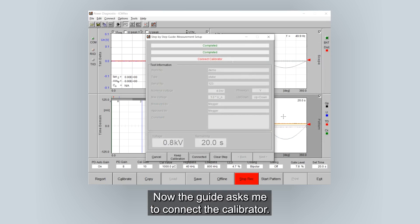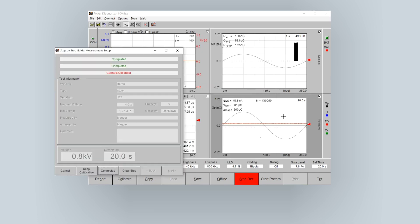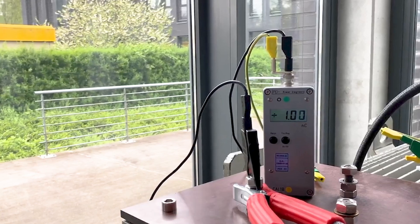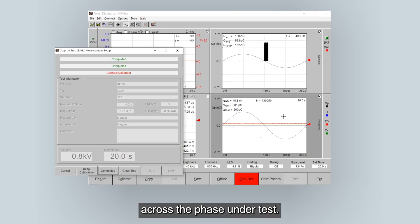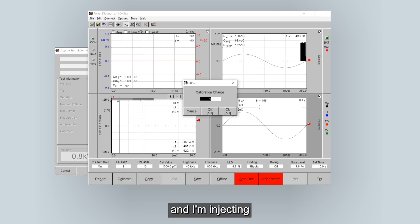Now the guide asks me to connect the calibrator. Now I will connect my calibrator across the test object. So now I've started injecting one nanocoulomb across the phase under test. Double click calibrator pulse and I'm injecting one nanocoulomb.